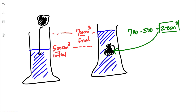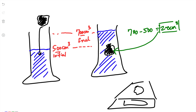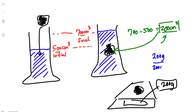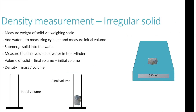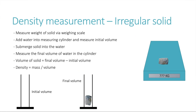Now that we have the volume of 200 centimeters cubed, we place the solid rock on the weighing scale, which gives a mass of 200 grams. Density equals mass divided by volume: 200 grams divided by 200 centimeters cubed equals 1 gram per centimeter cubed. That is how we determine the density of an irregular solid where you can't just measure the sides with a ruler.